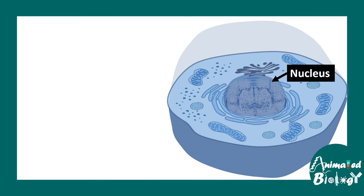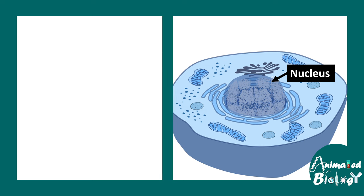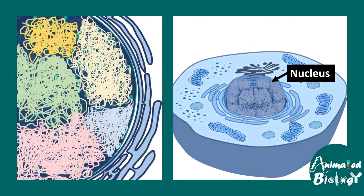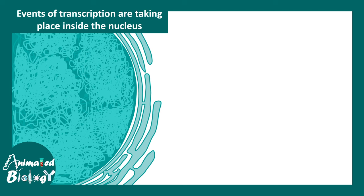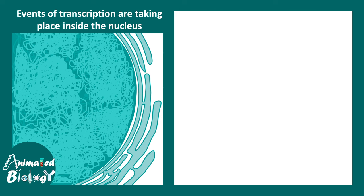When we think about transcription, we have to imagine a 3D space inside the nucleus of a eukaryotic cell. The genome exists in a 3D organization and it's incredibly complicated. A transcription factor has to navigate its way to the particular promoter site or regulatory element and then give rise to gene transcription — all of this happening in an incredibly crowded environment.